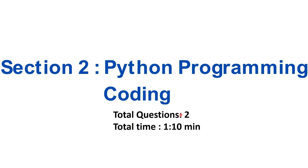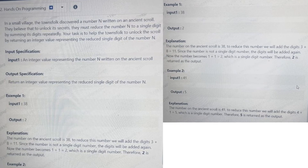Section 2: Python programming coding. In this section the total questions asked are 2, and the total time allocated is 1 hour 10 minutes. We have to write code for both questions in that time. This is the first question asked in the second section — Python programming. You can pause the video, read the whole question, and try to attempt it on your own.